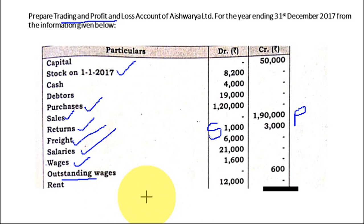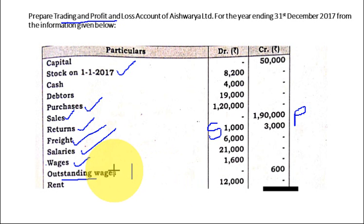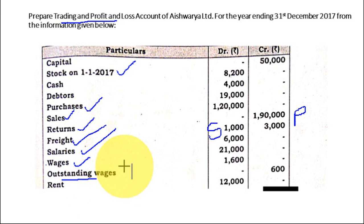When outstanding wages are given only in the trial balance, we have to write it only once. The question is whether to add it to wages in the Trading account or show it as a liability in the balance sheet. We have to show it as a liability, because for the next year people should know there are outstanding wages for the previous year. Always remember: when outstanding expenses are given in the trial balance, they must be recorded only on the liability side of the balance sheet — not in the Trading or Profit and Loss account.